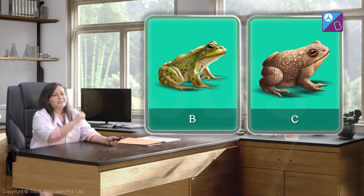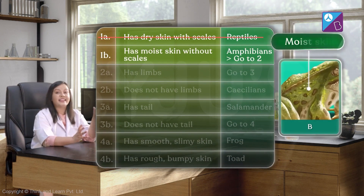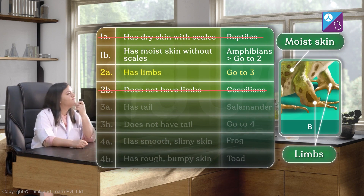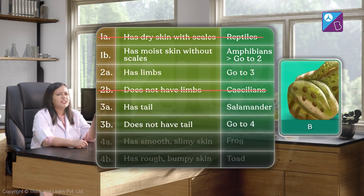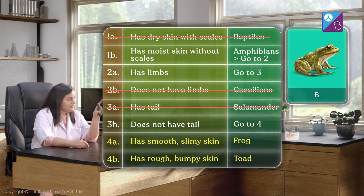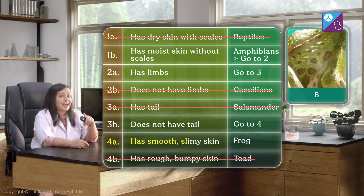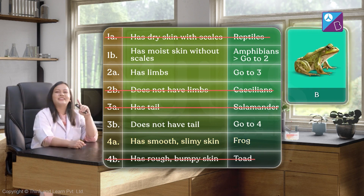Let's move on to specimen B. This specimen also has moist skin and limbs, but it does not have a tail. So, as the key directs, let's move on to statement 4. These statements talk about the skin again. As per the key, tailless amphibians with smooth slimy skin are frogs. So that makes specimen B a frog.